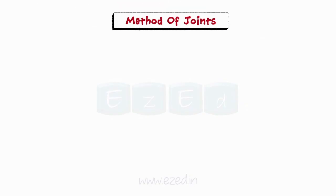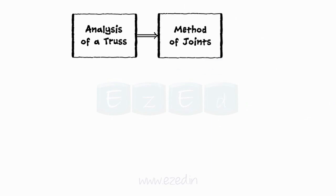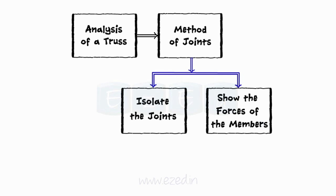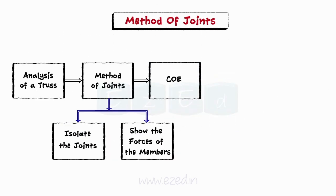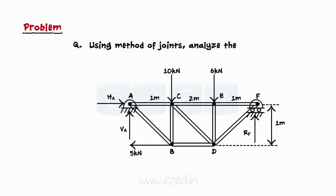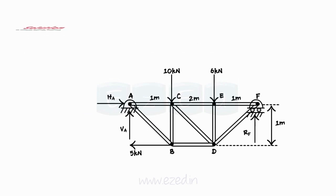The following problem will be helpful to understand the concept behind analysis of a truss by method of joints. We isolate the joints, show the forces of the members, and finally apply conditions of equilibrium to the joint to calculate the forces in all the members of the truss. Using the method of joints, analyze the truss shown. This is a simple truss and we have to find forces in all the members using method of joints.